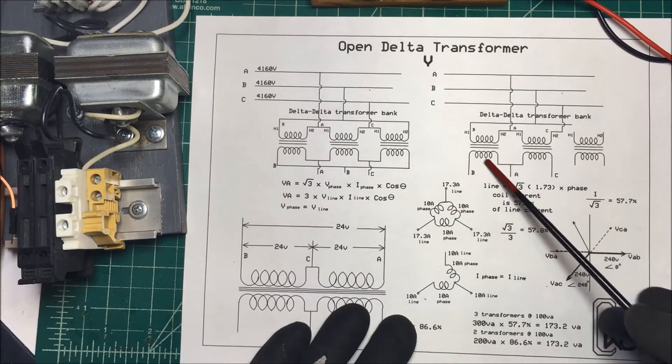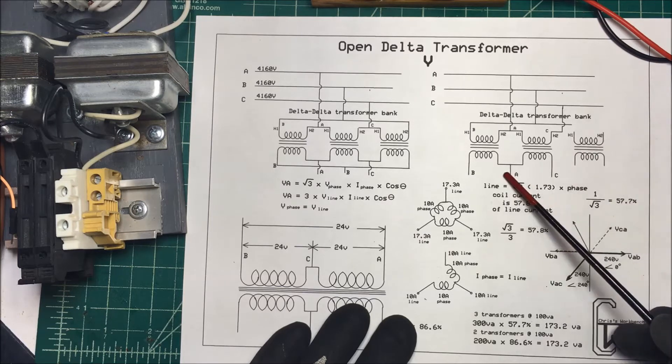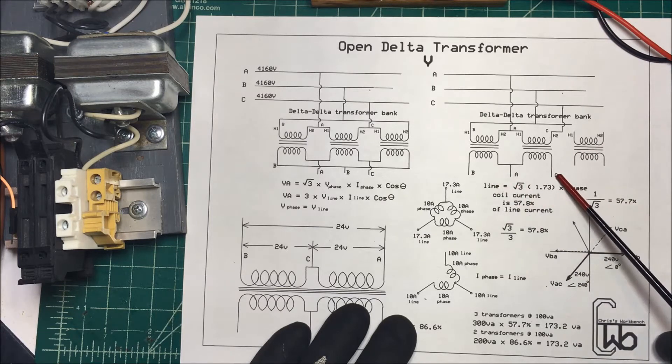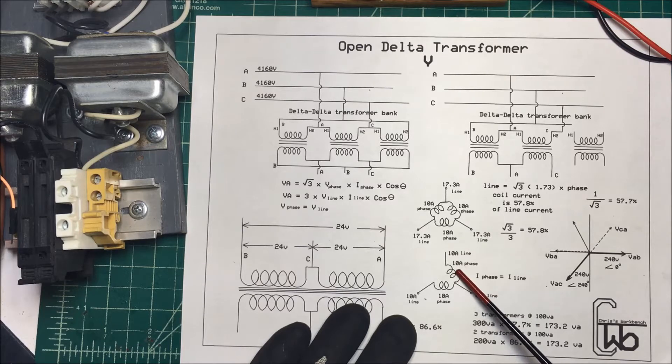Now what happens if one of these transformers burns up? We lose one of them. You got to take it out of the line here. We still have our A, B, and C here. We still have our three phases, but now we have this system down here. And now our phase current and our line current are going to be the same.